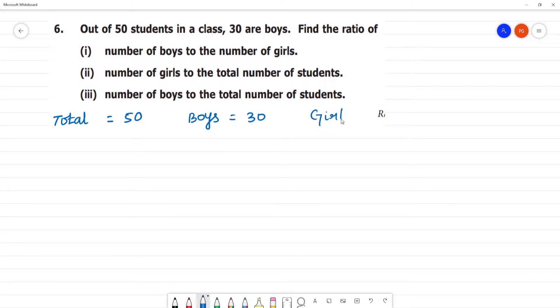Girls is equal to 50 minus 30. So how many girls will there be? There will be 20 girls. Clear?